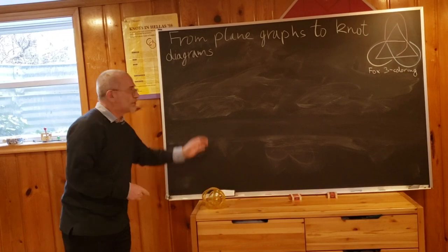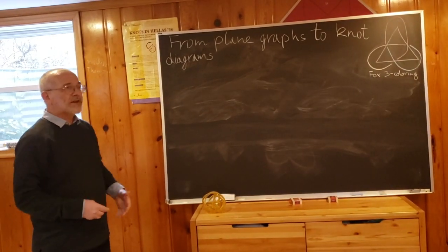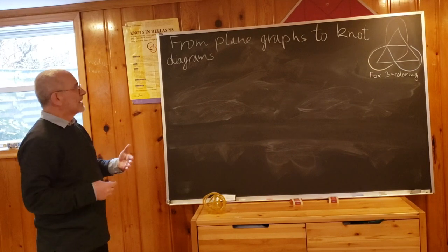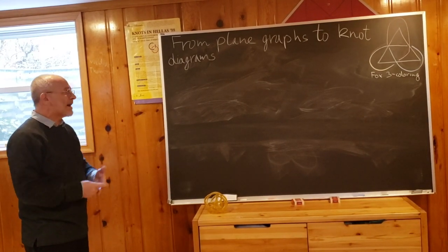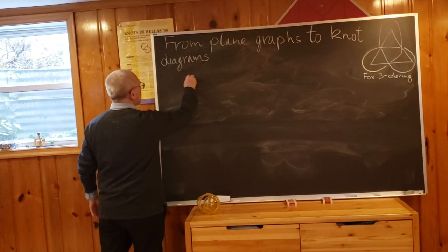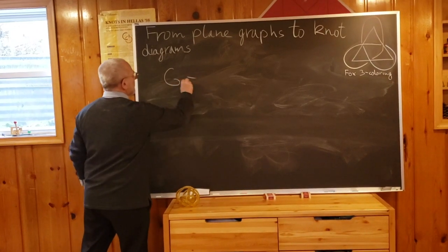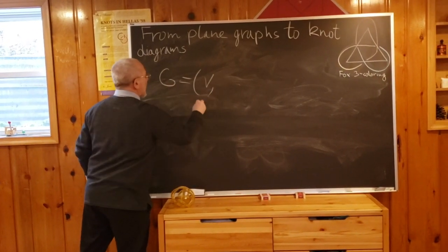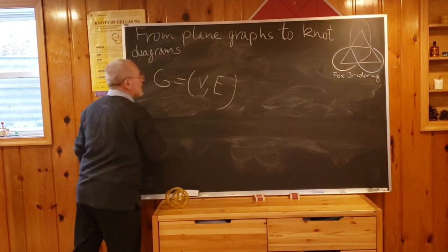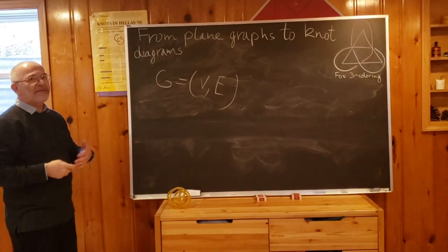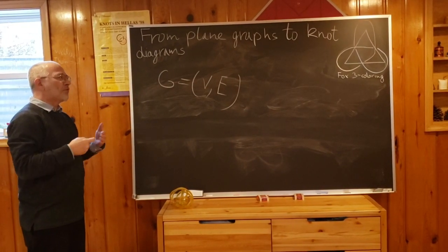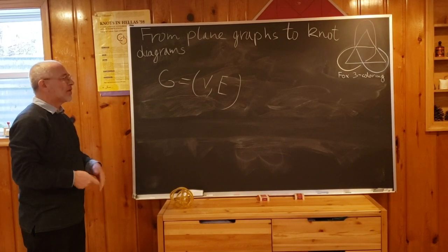First, what is a graph? Most of you know what a graph is. A graph, usually denoted by G, has vertices and edges. We assume that every edge has either two endpoints in vertices or one endpoint, which we call a loop.